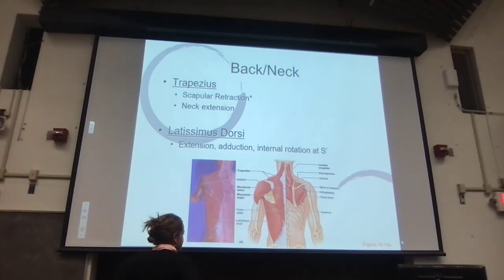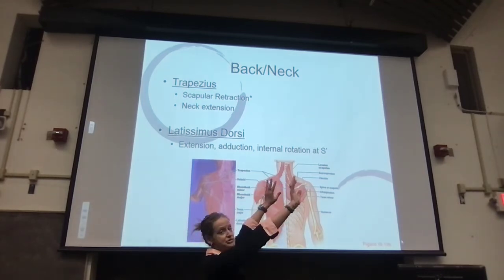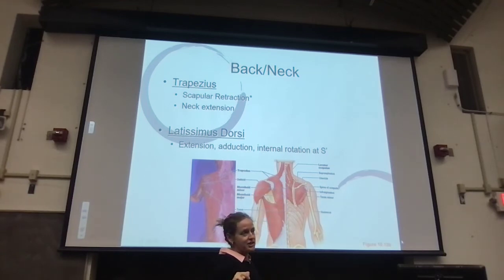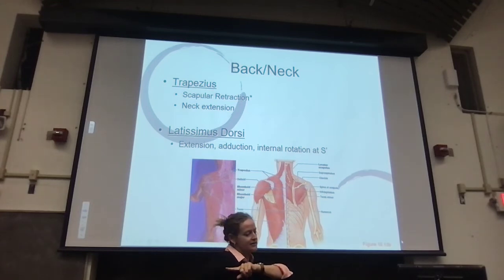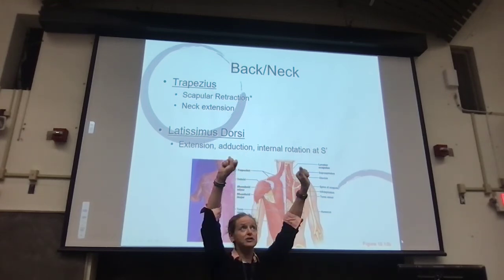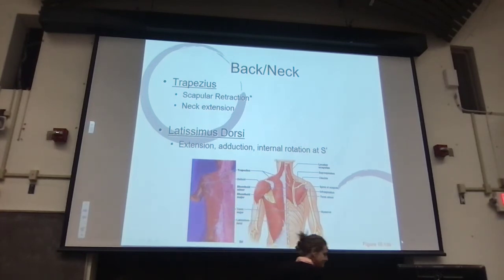Latissimus dorsi: shoulder extension, adduction, internal rotation. When you do a lat pull-down, you start with your shoulder flexed and extend it — you start abducted and bring it back into adduction. So it checks out.